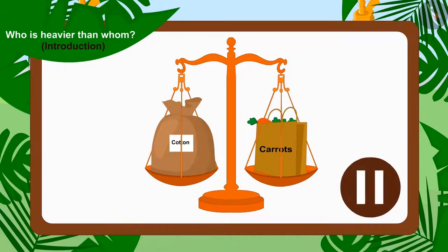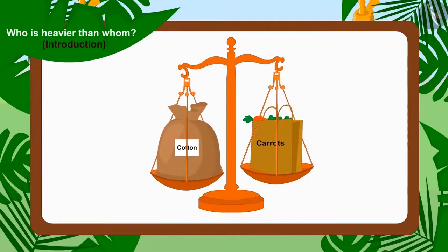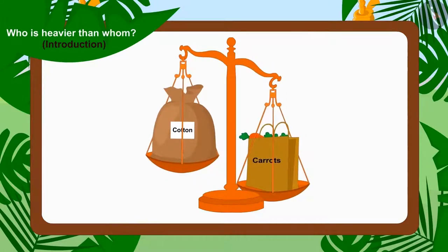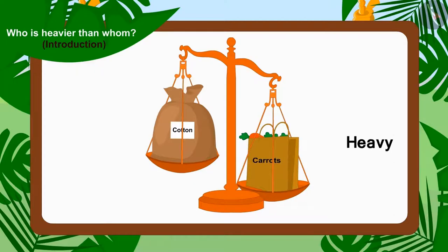If you want, you can stop the video and find the answer. Well done, children — you have found the right answer. The weighing scale tipped towards Bunny's carrot bag. That is why Bunny's carrot bag is heavier than Bhola's bag full of cotton.